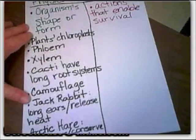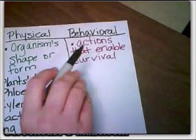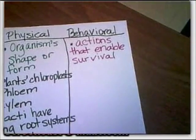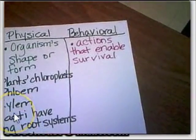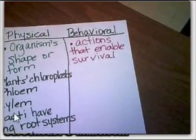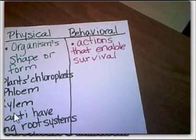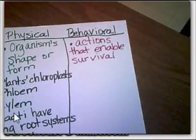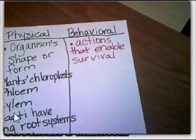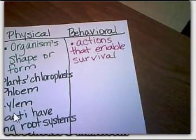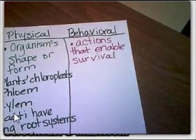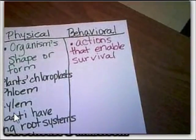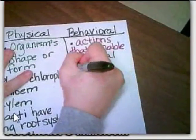Let's hop over to our behavioral column. Remember, these are actions that enable survival — behavior, actions, conduct. Sometimes animals do things just to help them be able to survive, especially as we talk about desert animals where it's so hot during the day.